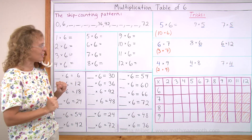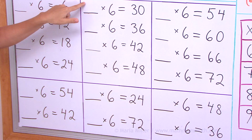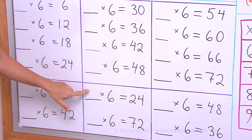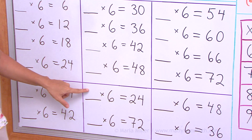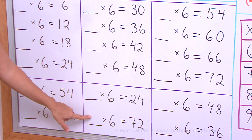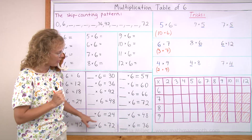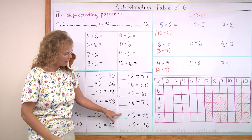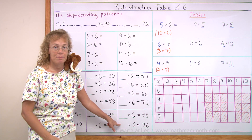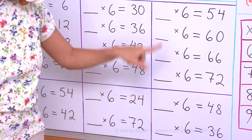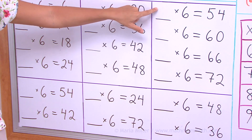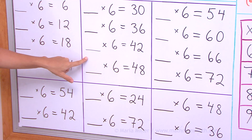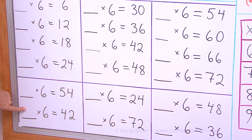I won't tell the answers now — you just say the answers as fast as you can. How many times 6 is 30? How many times 6 is 24? And how many times 6 is 72? How many times 6 is 48? How many times 6 is 36? How many times 6 is 54? How many times 6 is 48? How many times 6 is 42?